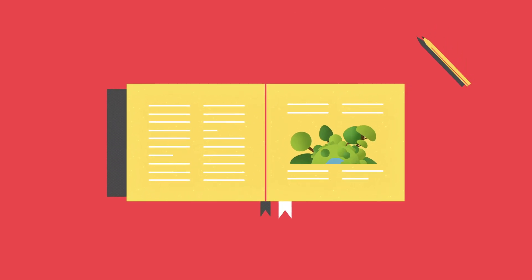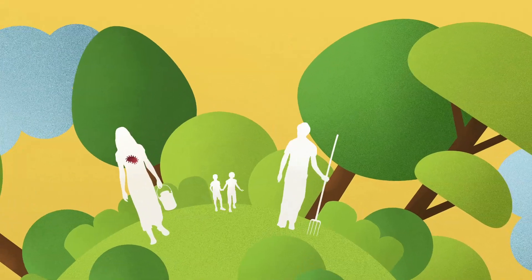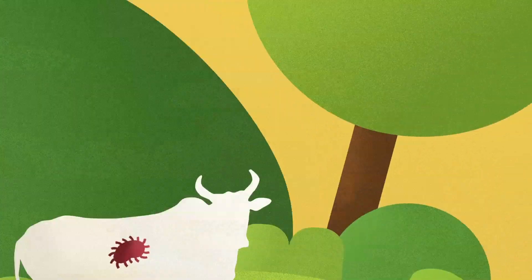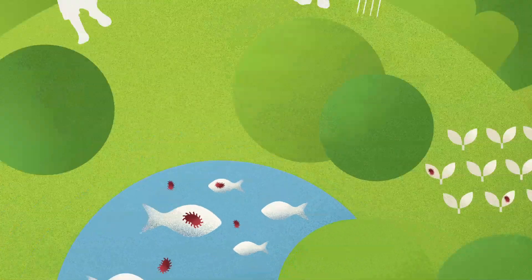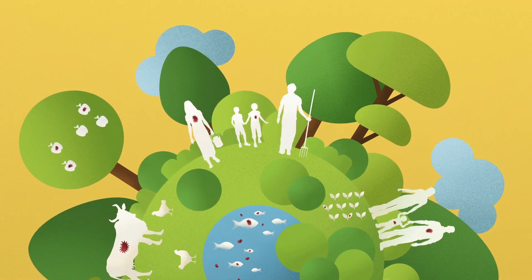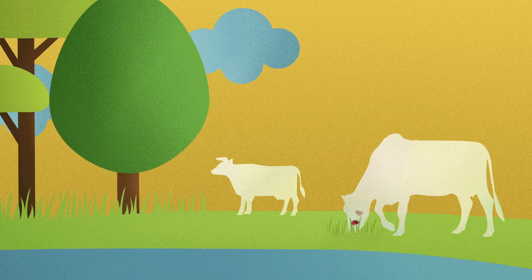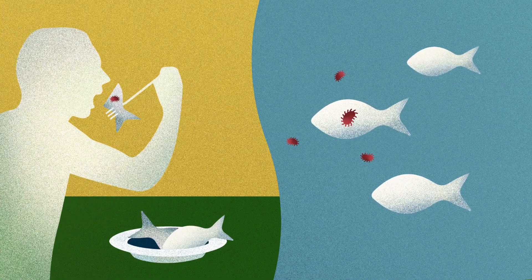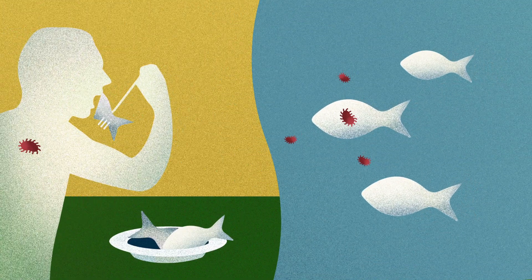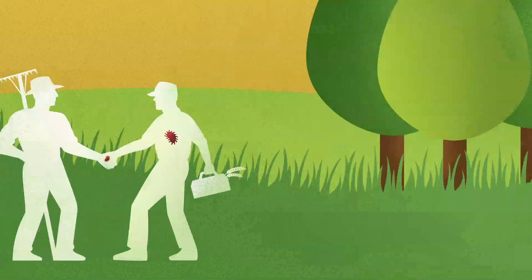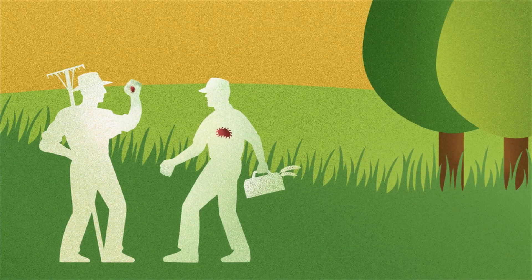Microbes that are resistant to antimicrobials can be found in people, animals, food, water and the environment. Antimicrobial resistant microbes can spread through the food chain and the environment, between people and animals or from person to person.